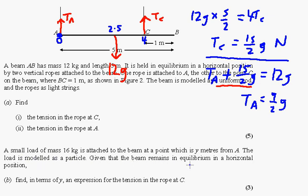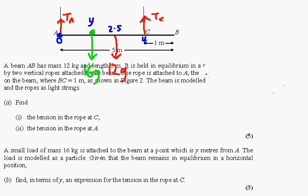Next thing is, a small load of mass, 16 kg, is attached to the beam at a point which is y metres from A. The load is modelled as a particle, given that the beam remains in equilibrium. OK, I'll need to get rid of some of this stuff. I'll get rid of this stuff and be back any second now. Right, I'm back now. I didn't realise I'd have to add extra things to the diagram. So I've added the load Y, which is 16 kg, so 16G is the force, at a point Y, which we don't know where it is. So I'll just label it Y there. I don't know exactly where it is, but as long as I do the calculations right, it shouldn't matter.